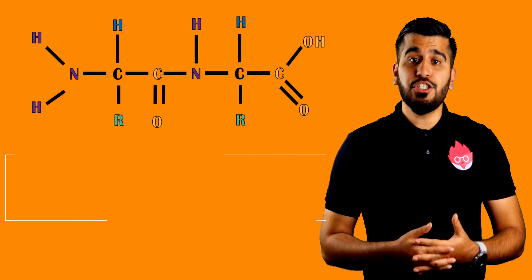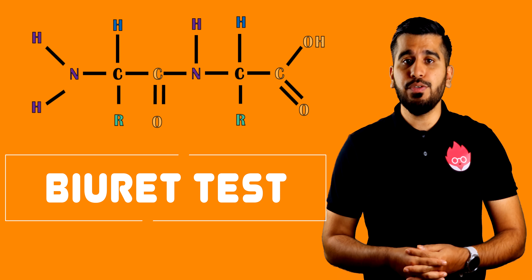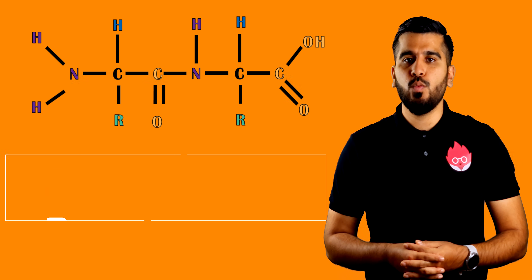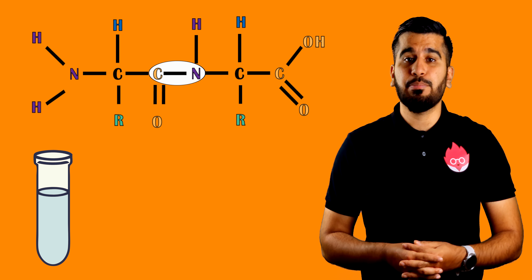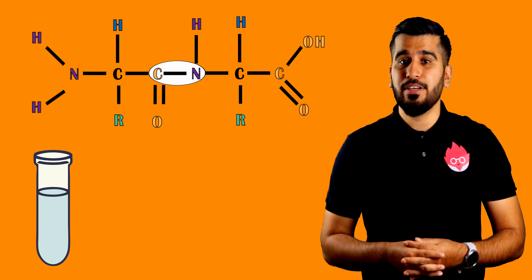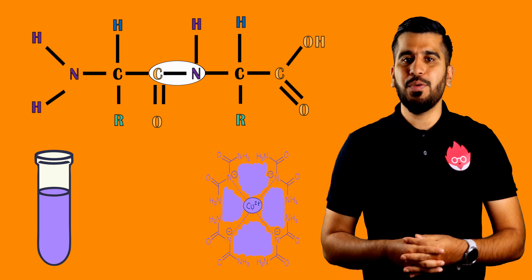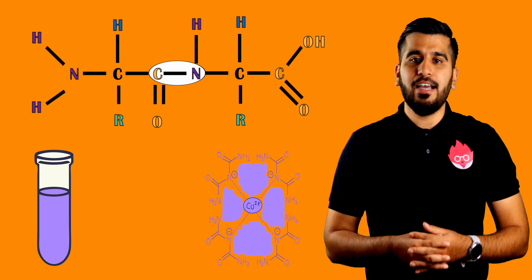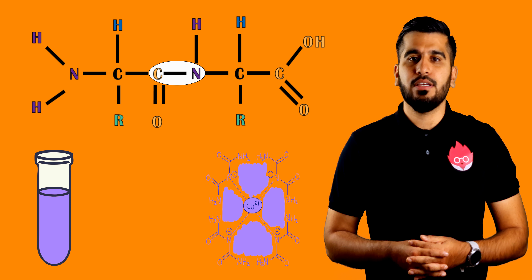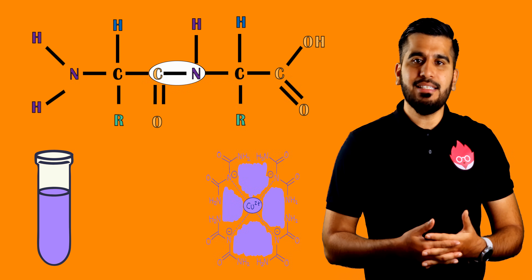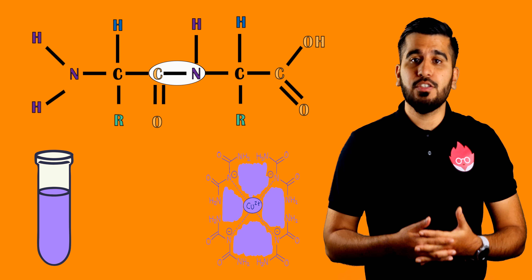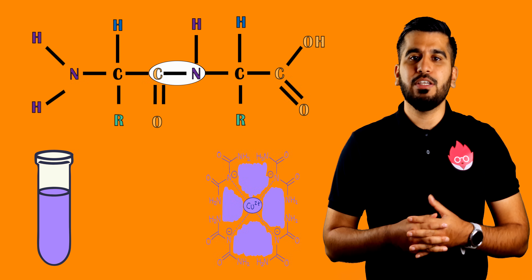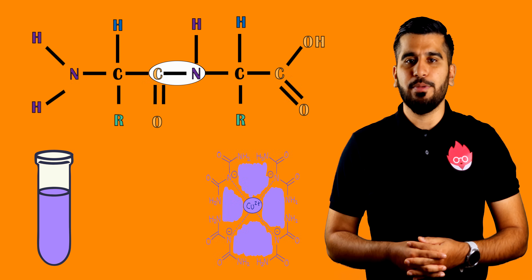If you wish to test for the presence of proteins, you can use the Biuret test. The Biuret test works by detecting the presence of the peptide bond. The copper ions bind as shown in the diagram, causing a violet colour to appear. The intensity of the violet colour is proportional to the concentration of protein and can be determined using colorimetry.